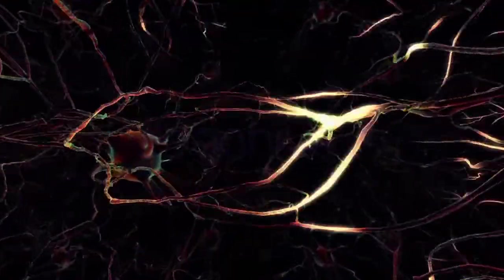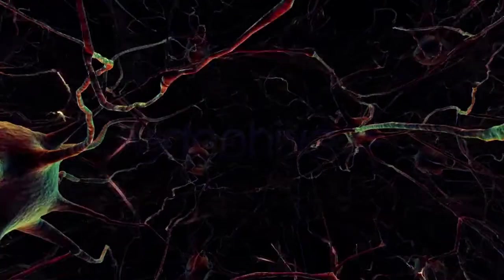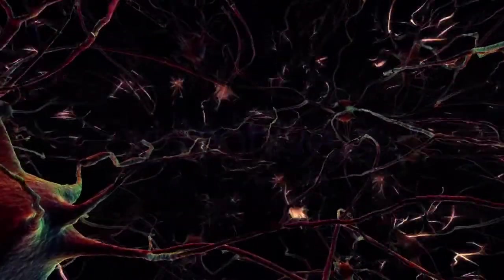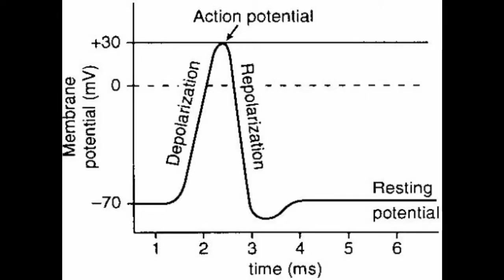Once the threshold is reached at negative 55 millivolts, more sodium gates open and sodium ions flow into the cell, raising the voltage rapidly to 30 millivolts. This process is referred to as depolarization.